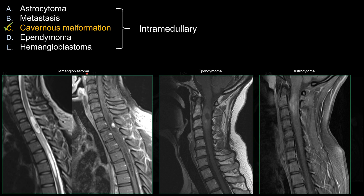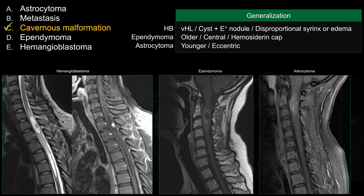Among those three choices, hemangioblastoma has a more characteristic appearance on imaging. If the history of von Hippel-Lindau disease is given, that's essentially a giveaway. On imaging, the classic appearance for hemangioblastoma is either a cystic lesion with a small enhancing mural nodule, or a small enhancing lesion with a disproportionately large amount of syrinx or cord edema.